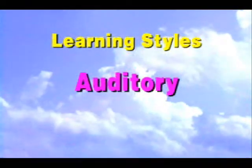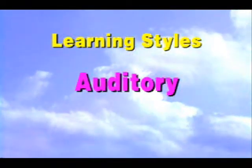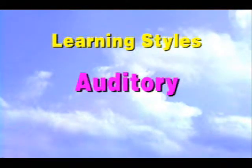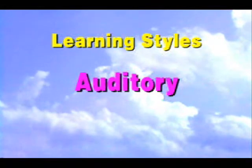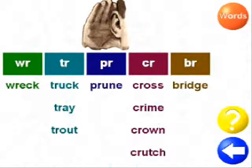The auditory learner learns best by hearing information. Activities that involve listening and repeating aloud have been developed for students who have strong auditory processing skills. For example, students are asked to select the correct heading or category for each word that they hear.